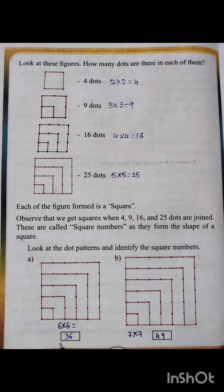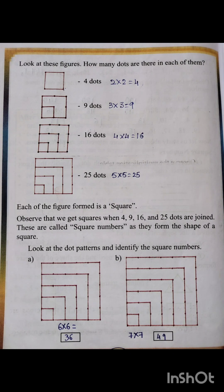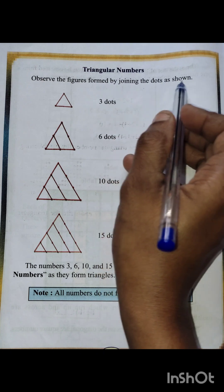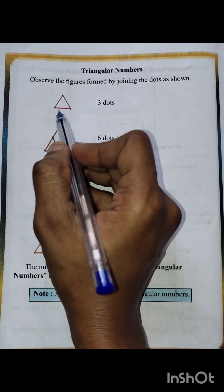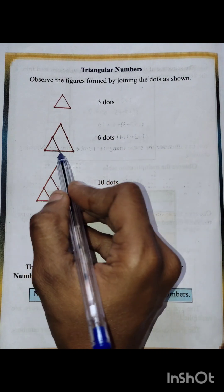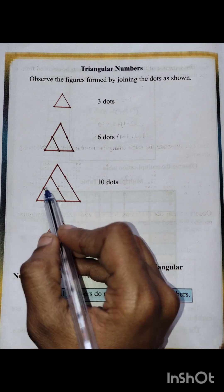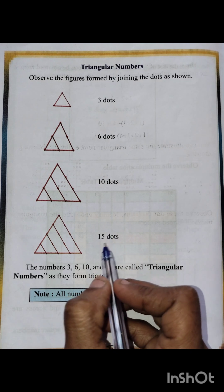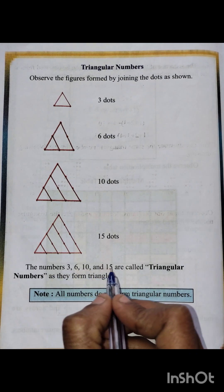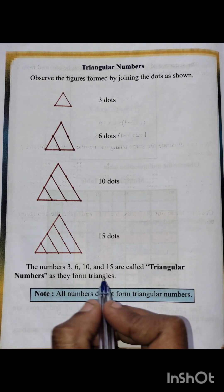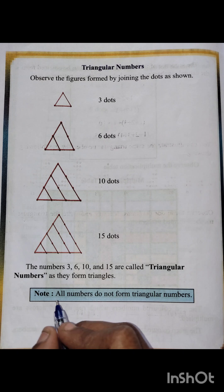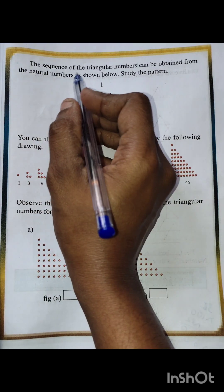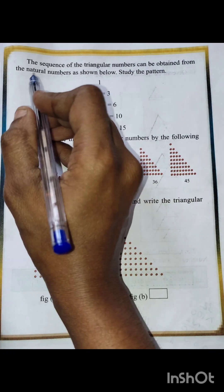Now let's see triangular numbers. Observe the figures formed by joining the dots: 3 dots joined give a triangle, then 6 dots, then 10 dots, then 15 dots. The numbers 3, 6, 10, and 15 are called triangular numbers as they form triangles. Note that not all numbers form triangular numbers.